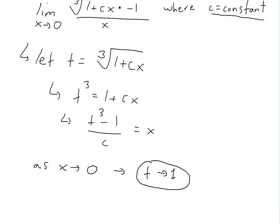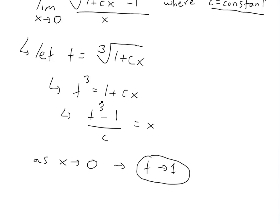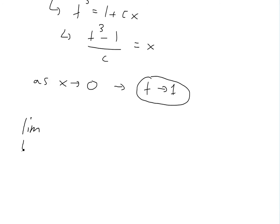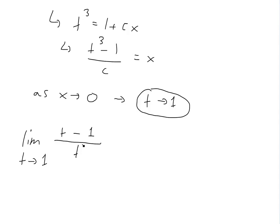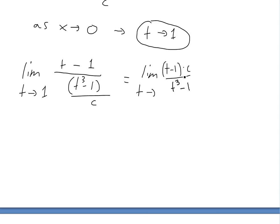So now we're ready to substitute. We've gotten rid of the cubed root to simplify things. We'll have the limit as t approaches 1 of (t - 1) on top, because we let the cubed root become t. The bottom is going to be (t³ - 1) / c, but we put the c on top, giving us c times (t - 1) over (t³ - 1). We can write t³ - 1 as a difference of cubes.